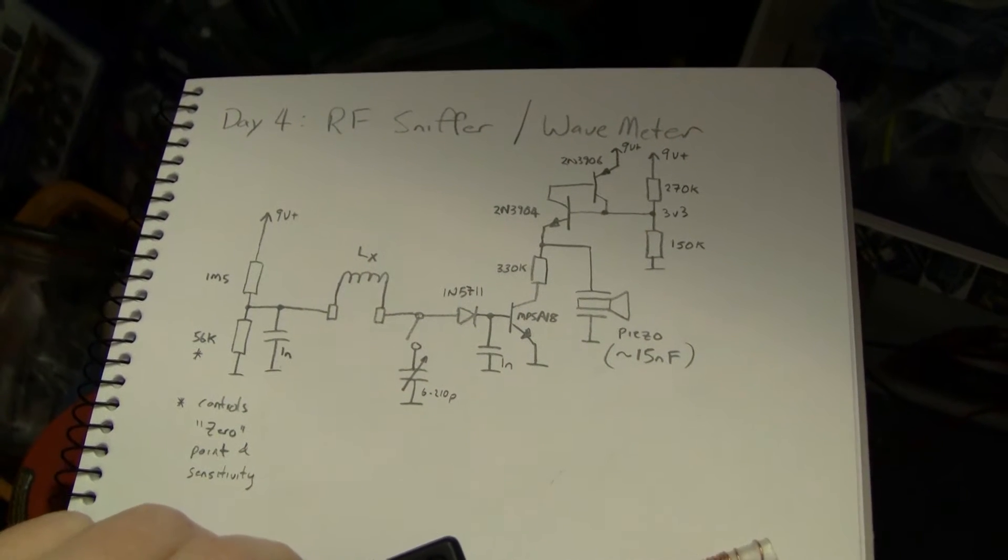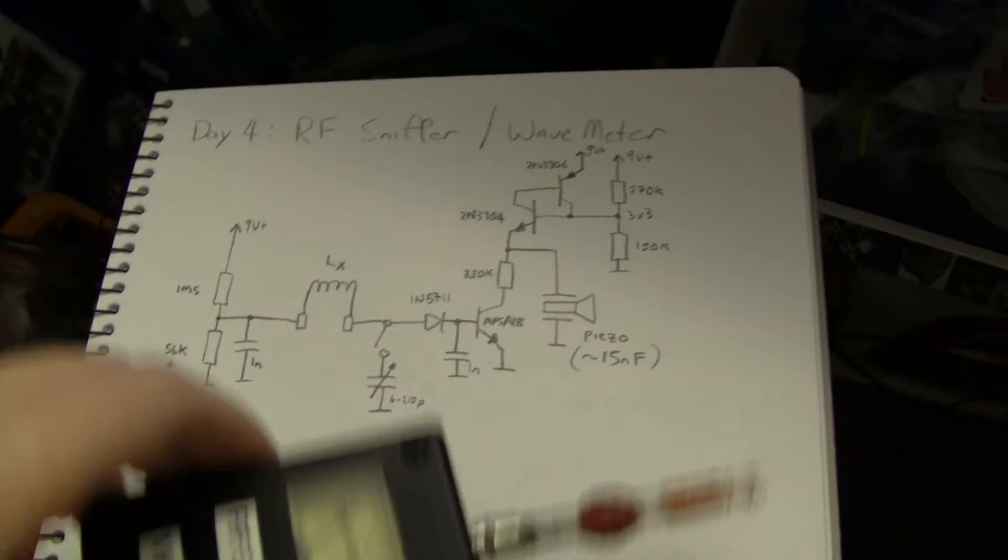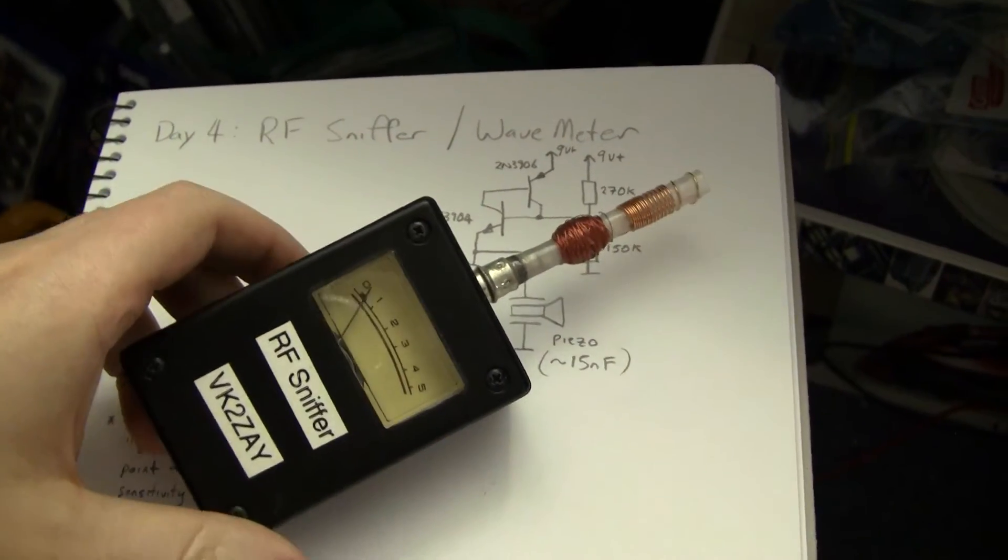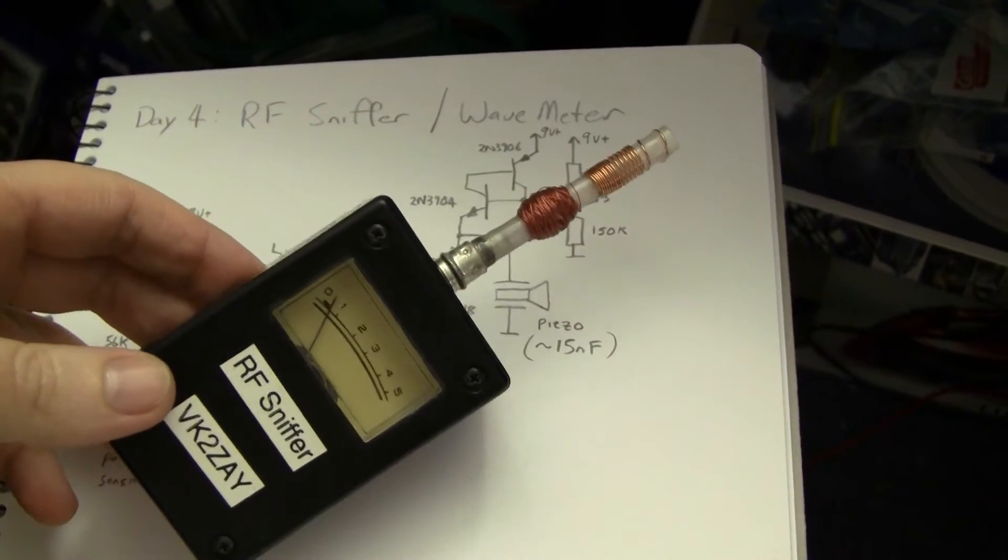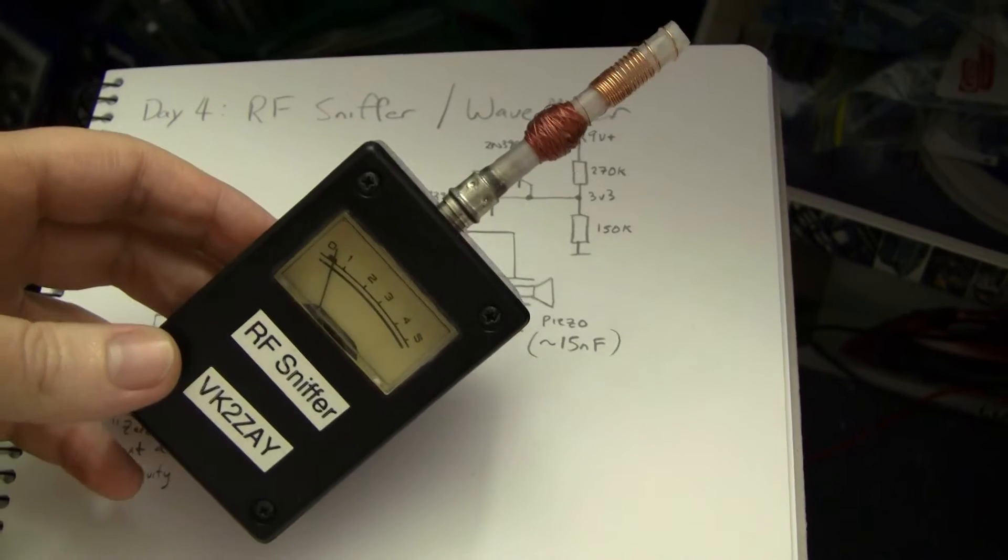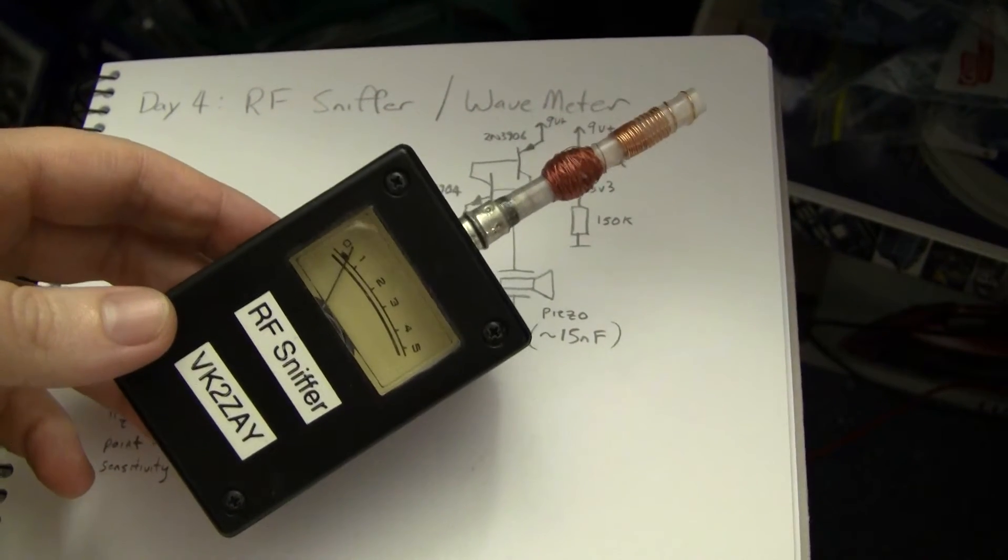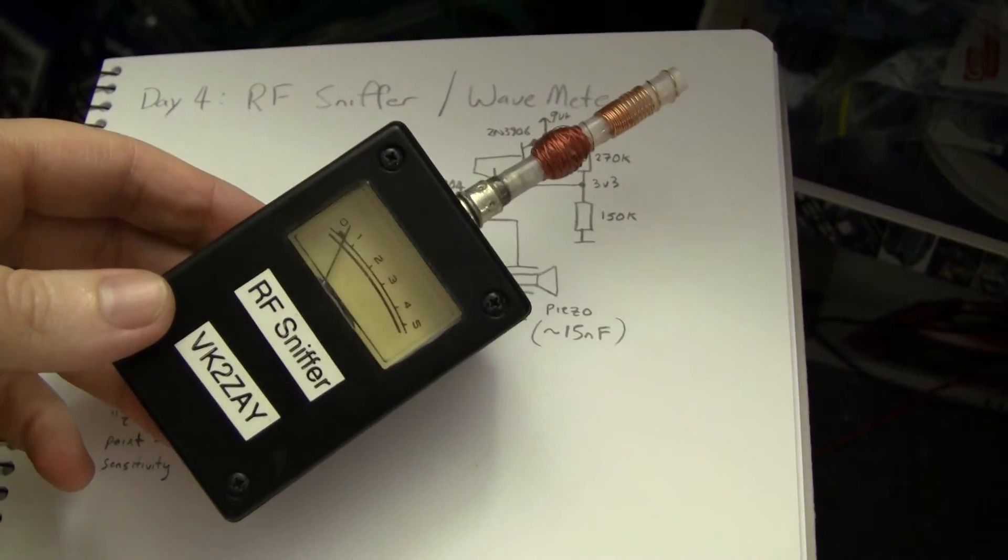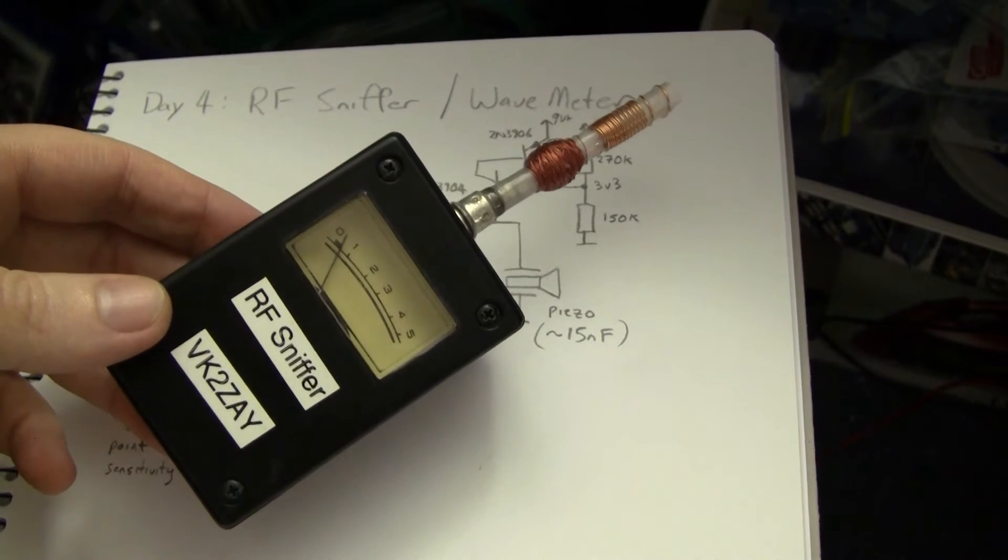Some of you who've been to my website and looked at some of my other projects may have seen me using my RF sniffing device or my wave meters. They're quite useful for telling when an oscillator is operating or if you've got any RF or oscillation going on at all in your circuit.